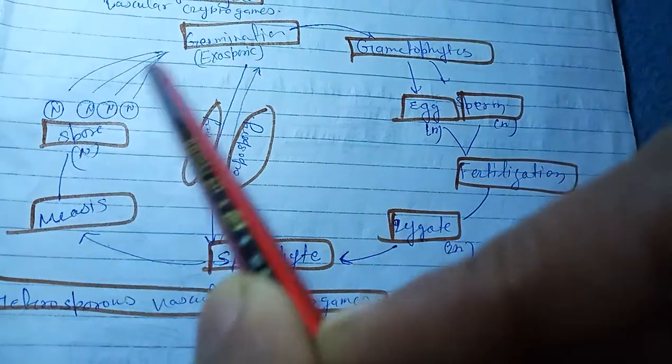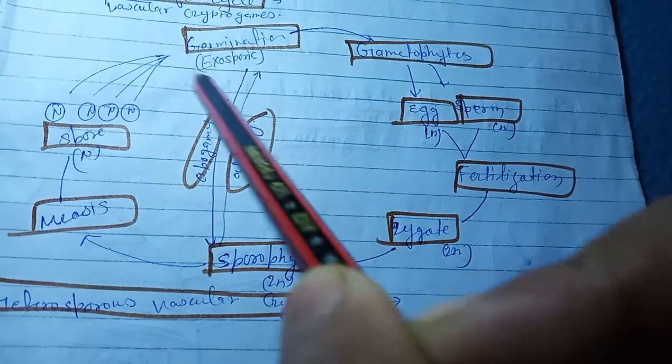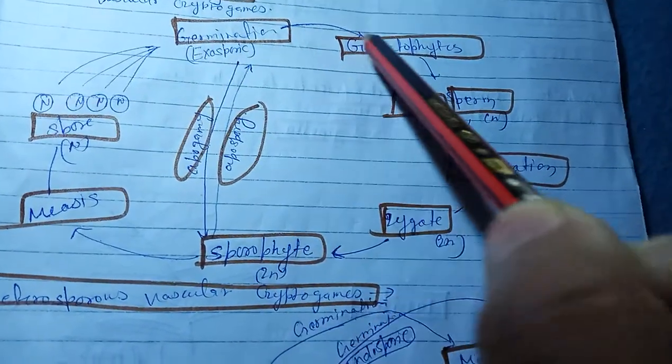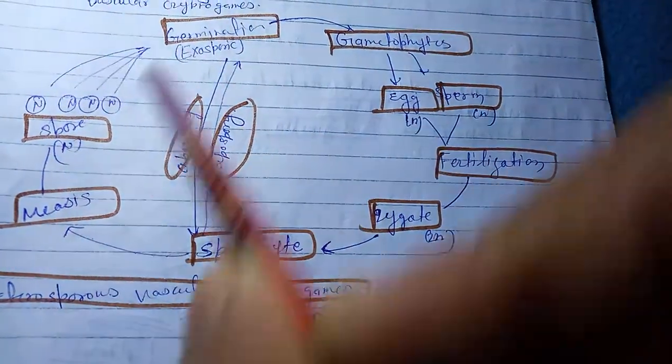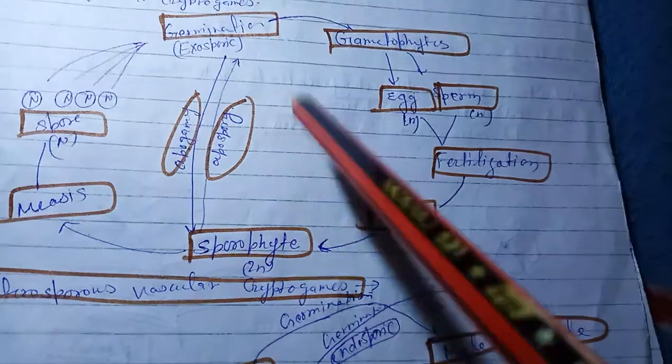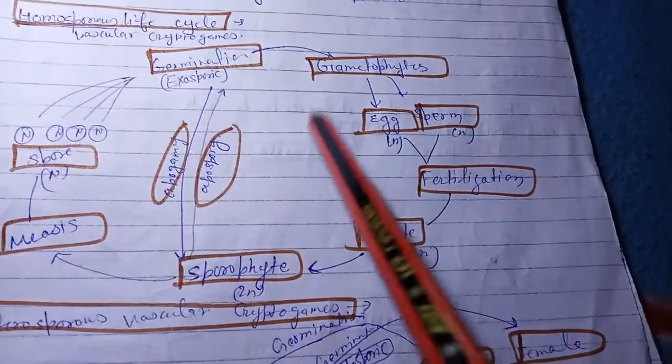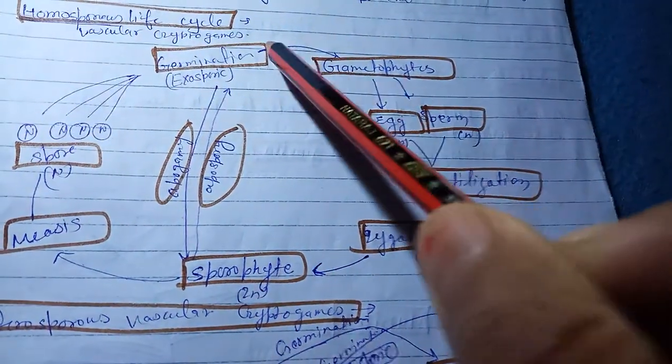Sporophyte after meiosis reduction and they are going to form spores, and then they germinate in exosporic process and again complete and repeat the cycle of homosporous life cycle.